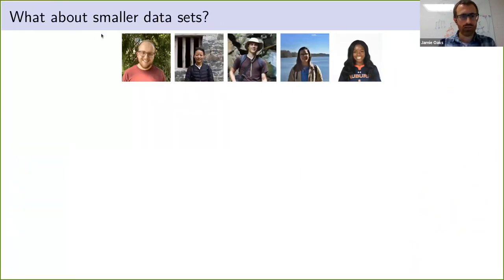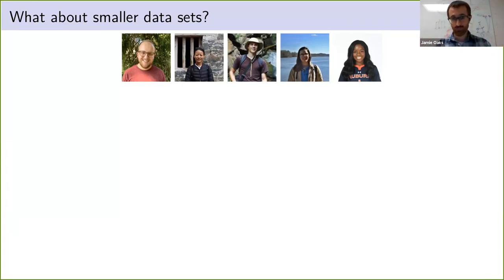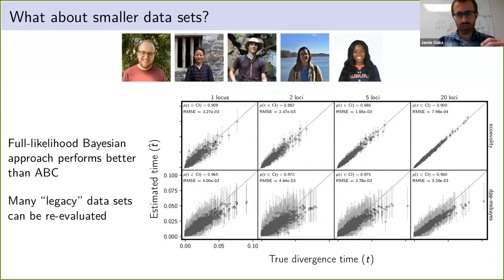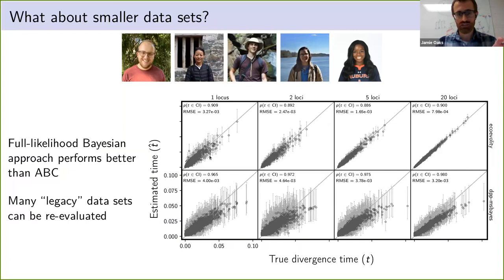Another question we've been exploring is what about smaller data sets? EcoEvolity is really designed for genomic data, and smaller data sets with only one or a handful of loci actually violate some assumptions it makes about how ancestry is shared across the genome. We did simulations to test that anyway, comparing it to an ABC method designed for these smaller data sets. Even with a data set as small as one 500-base-pair locus, our full likelihood method is already doing better, and its performance increases much more quickly as we add loci. This means we can go back and reevaluate legacy data sets with the new approach.